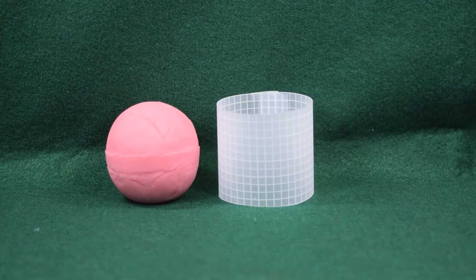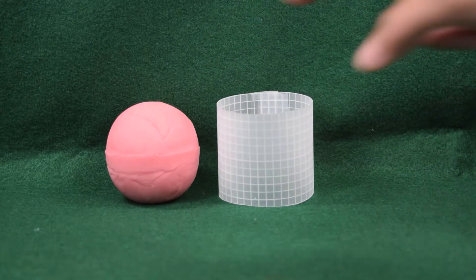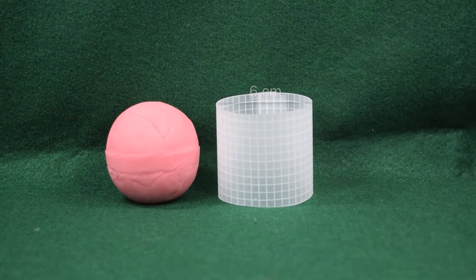To help us find its volume, we're going to compare it to a cylinder that has the same dimensions. Remember, on a sphere, the height and diameter are the same measurement, so the height on both the sphere and the cylinder is 6 centimeters.